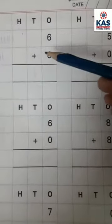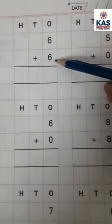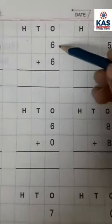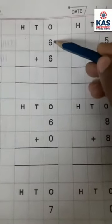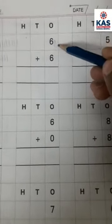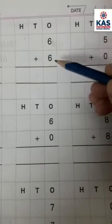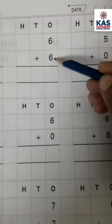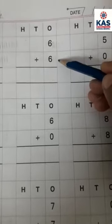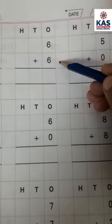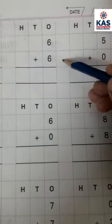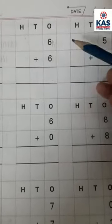Next: 6 plus 6. Count 6 — 1, 2, 3, 4, 5, 6. Then another 6 — 1, 2, 3, 4, 5, 6.